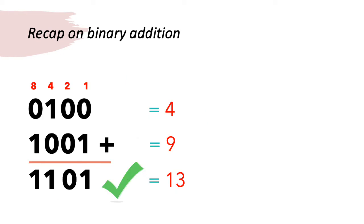In one of our previous lessons, we also looked at how you could add two binary numbers together. So in this example, we've got the binary values 0100 and 1001. To add them together, we do it just the same as we would do normally. We work from right to left, adding each pair of bits.